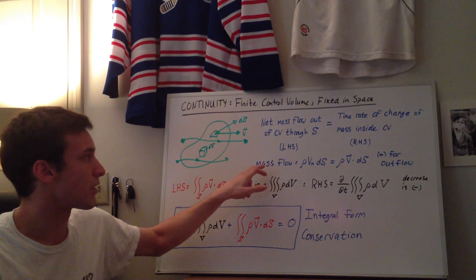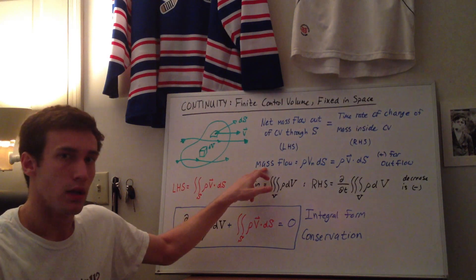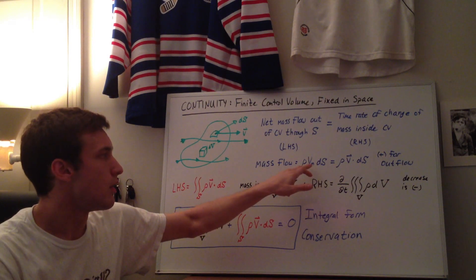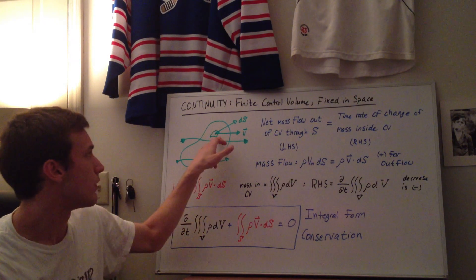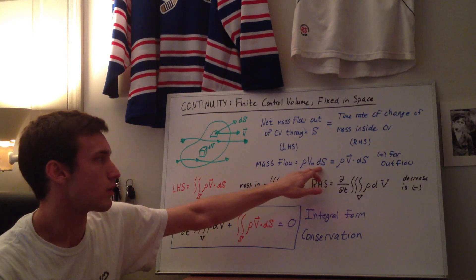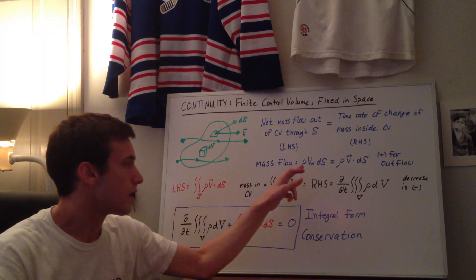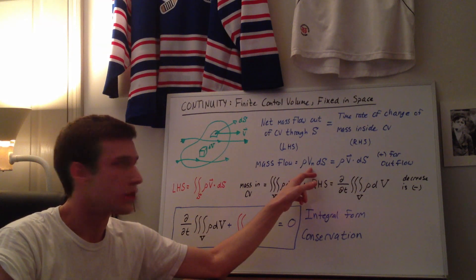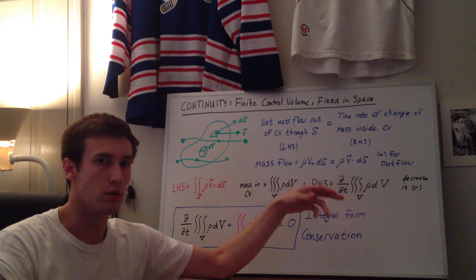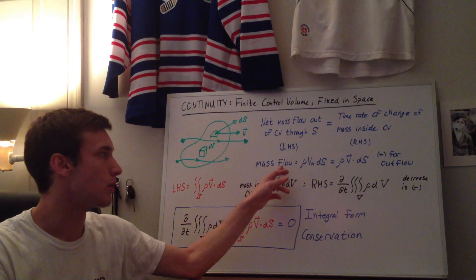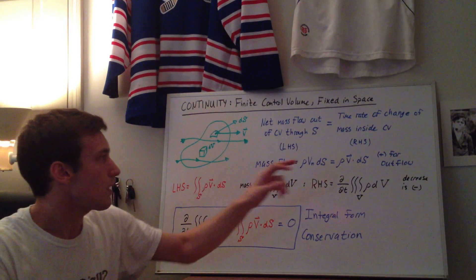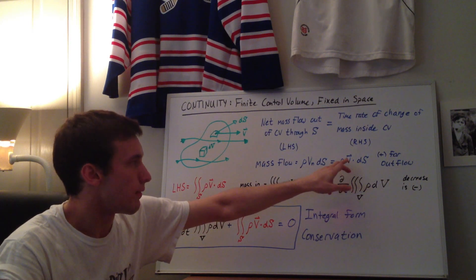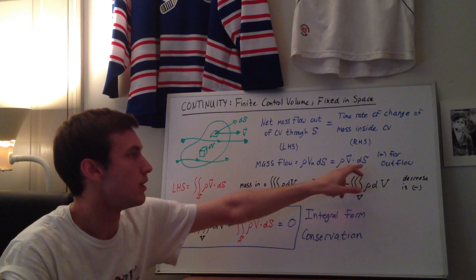First we need the mass flow, which is in units of kilograms per second. We need density times the normal velocity component out of the control surface times the area of the control surface. The density is in kilograms per meter cubed, the velocity is in meters per second, and the area is in meters squared, giving us kilograms per second. You can write it in vector form as the density times the velocity vector dotted with the area dS.